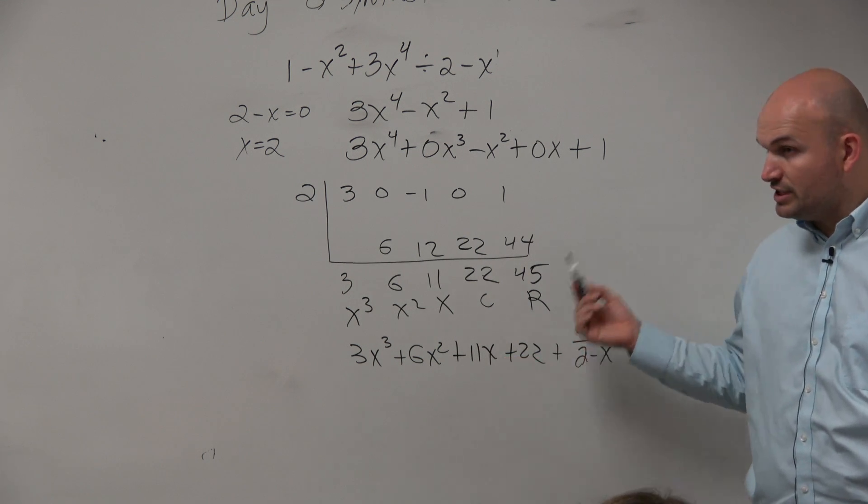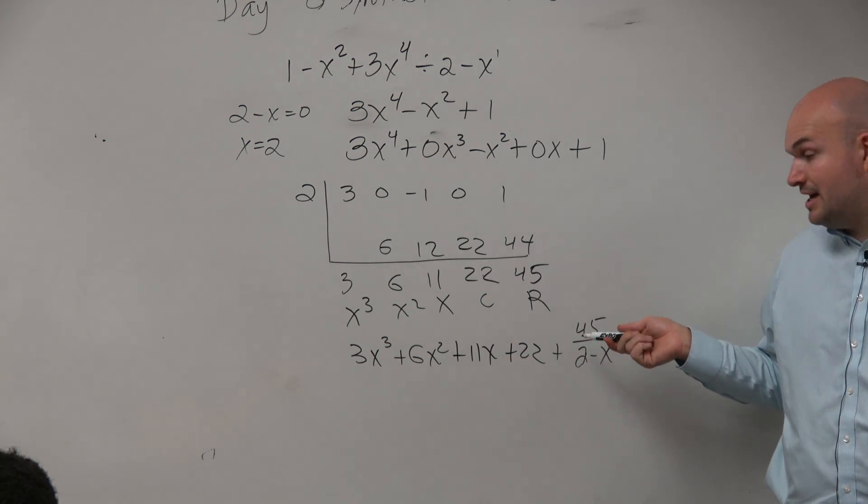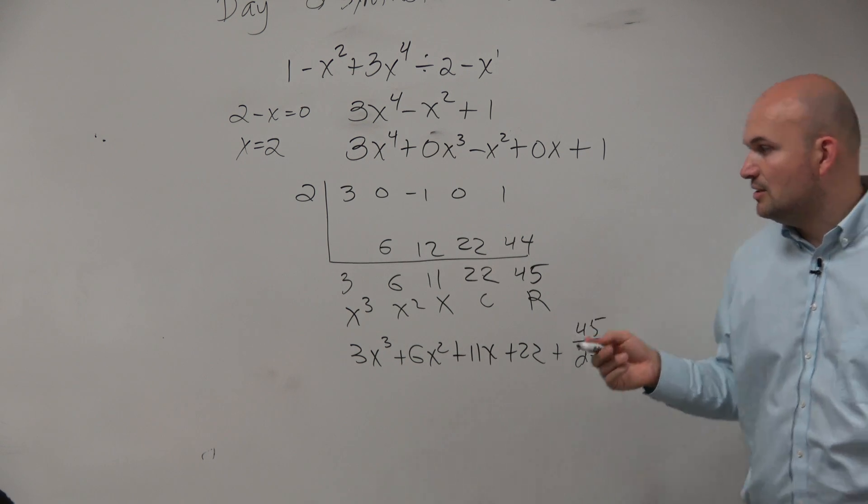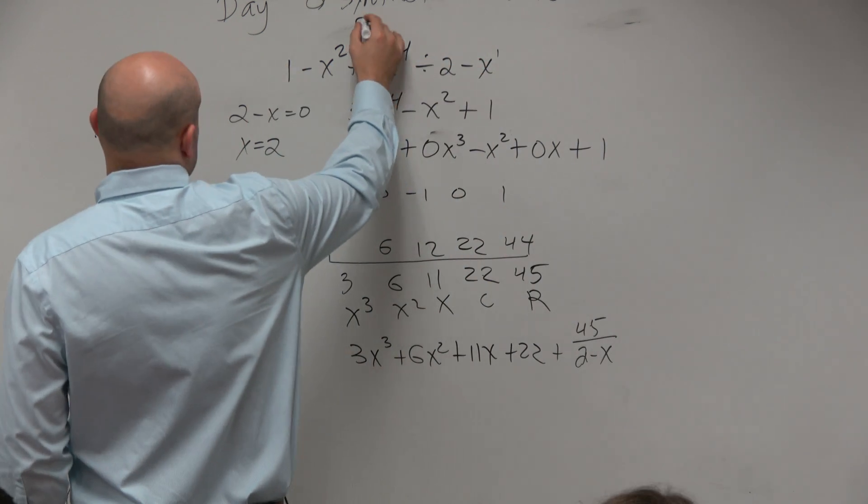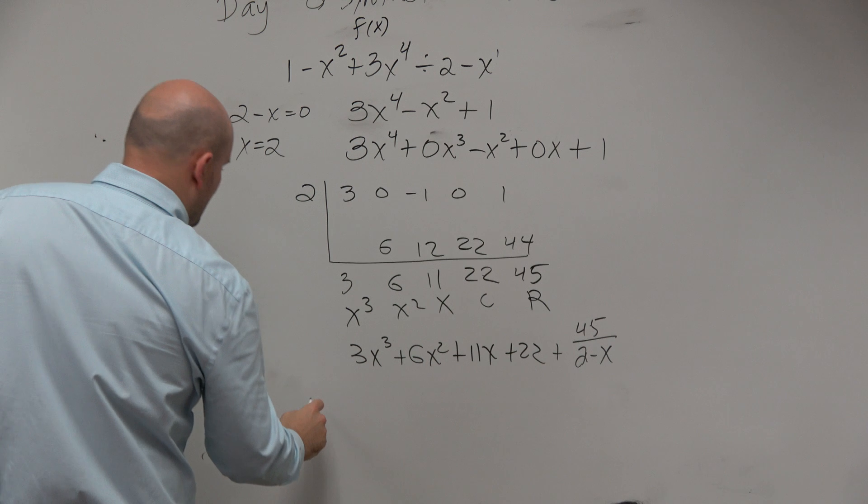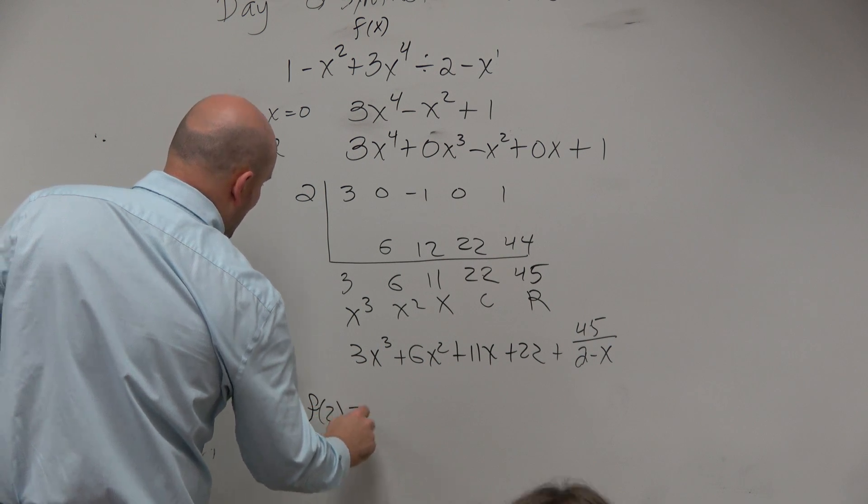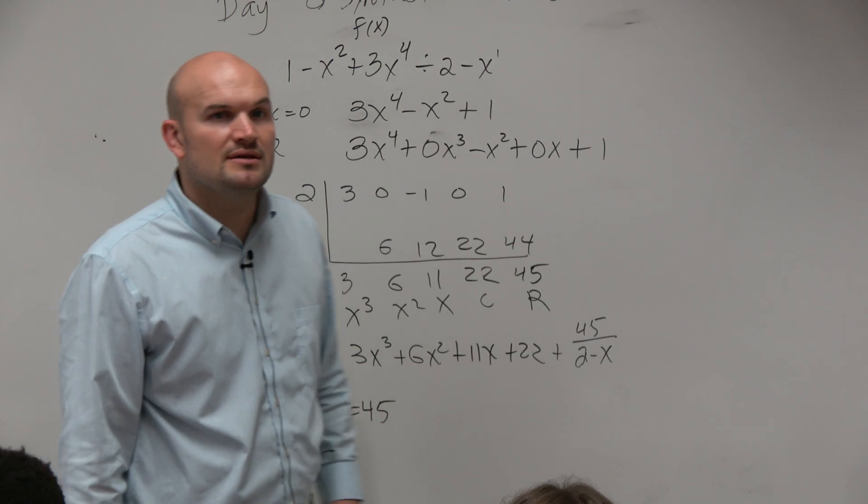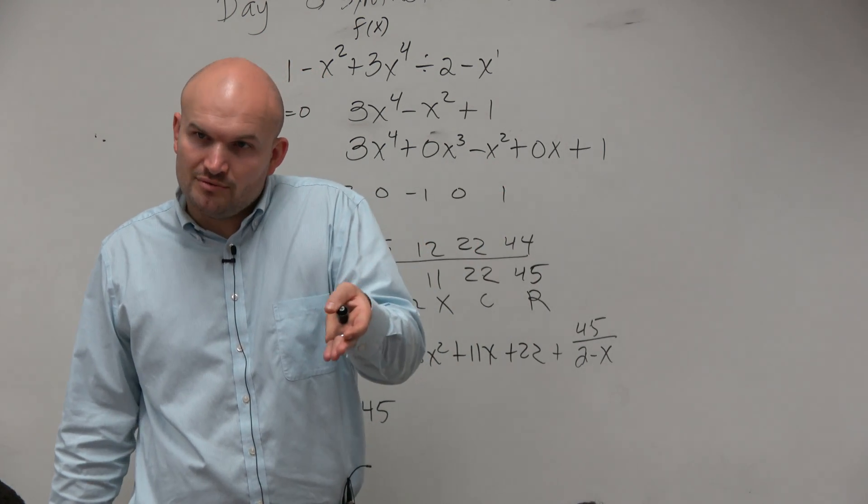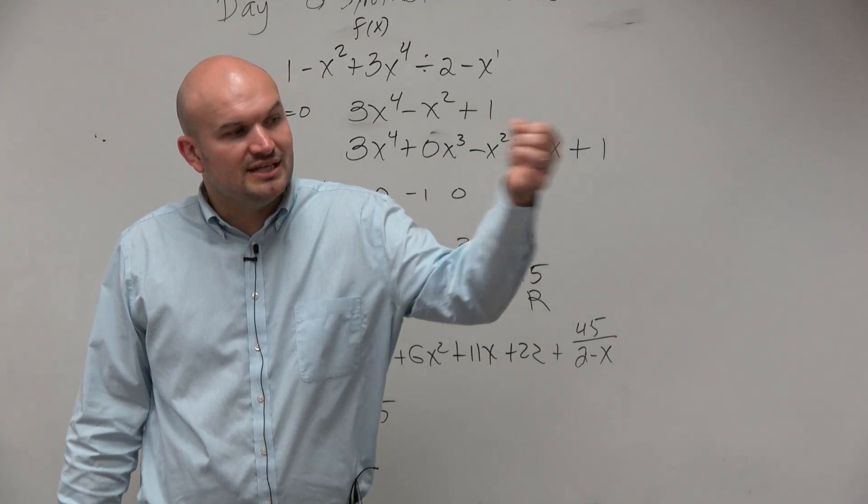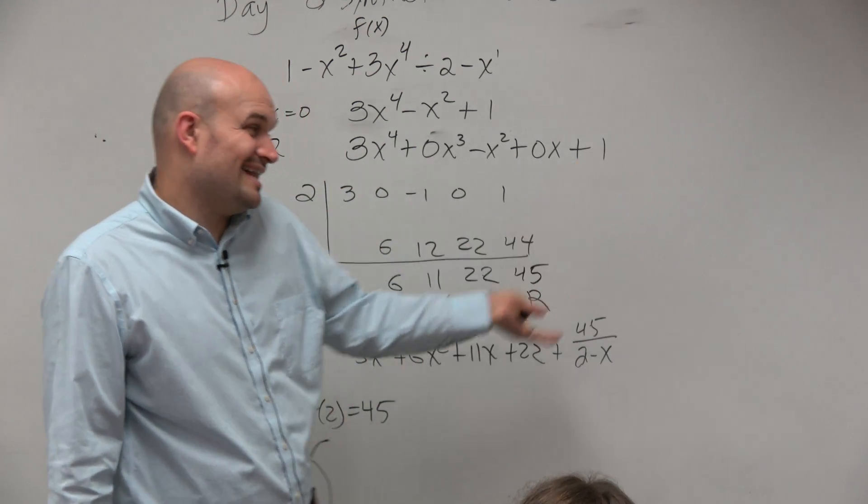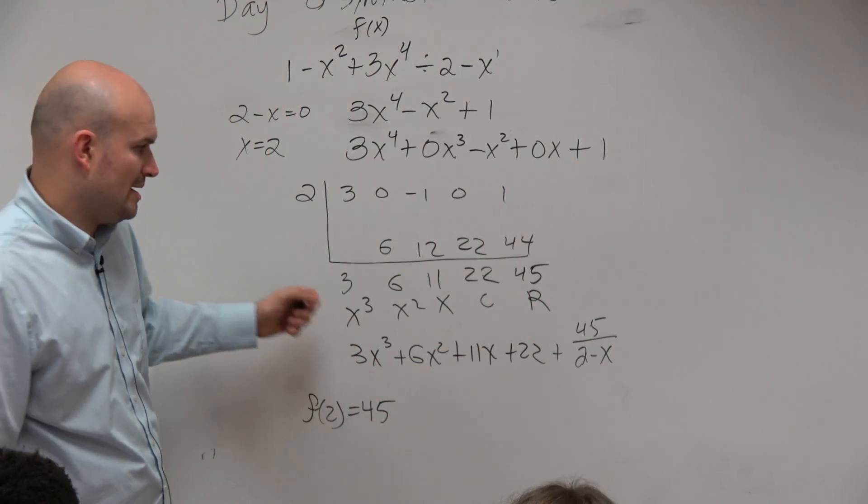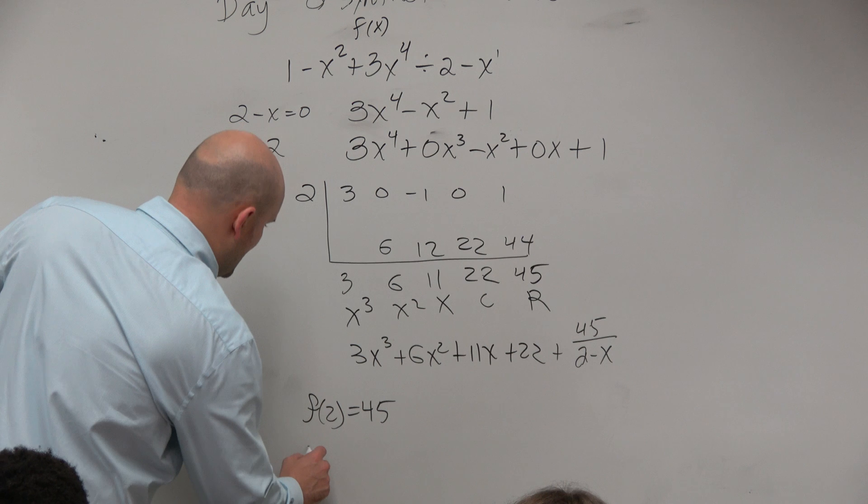But again, guys, if we're going to use the remainder theorem, when I do, if we call this like function f of x, if I plug in f of 2, I should get 45. That's what the remainder theorem tells us. Whatever I'm plugging in of that zero, I should get, it's not a zero though, but I should get the same remainder. So let's check that out. Let's see if that happens.